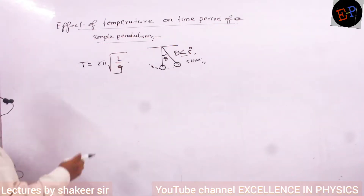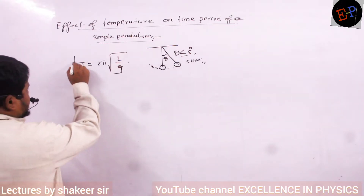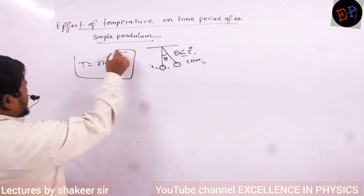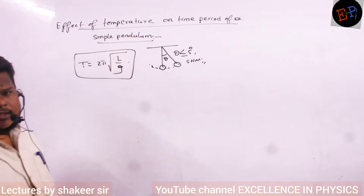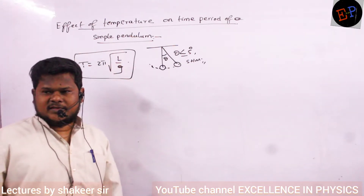The equation of time period in simple harmonic motion is T equals 2π times the square root of L by G. This is the relation.